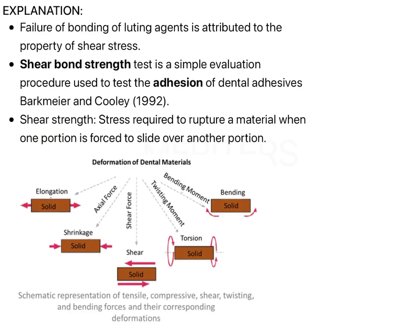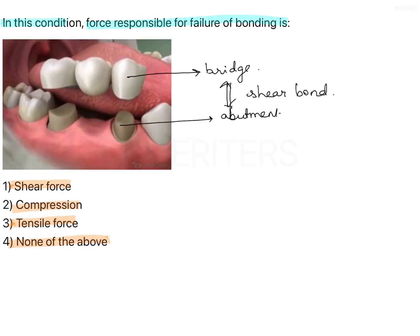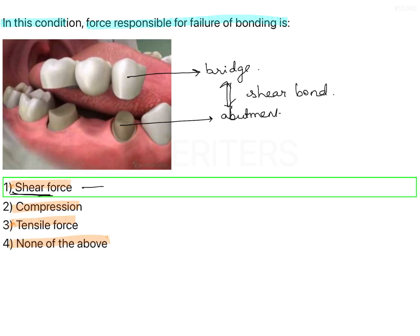What is shear bond? Tensile force causes elongation of the material, and compression causes shrinkage of the material. Both of these properties are not relevant in terms of bond strength. The bond strength of a material is determined by shear force — that is, the surface force of the cement. If there is any failure of bonding between the cement and the restoration, it is mainly because of the deficit of the shear bond between them. Therefore, shear force causes the failure of bond between the bridge and the abutment.